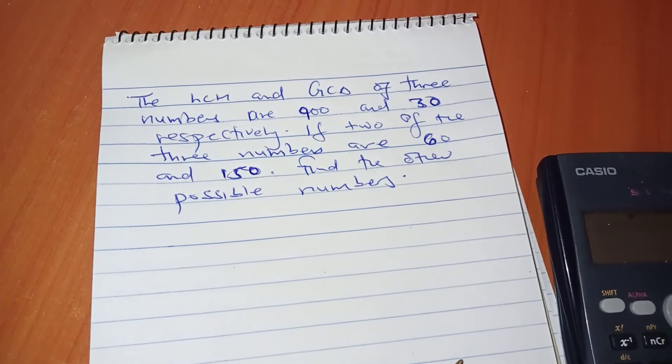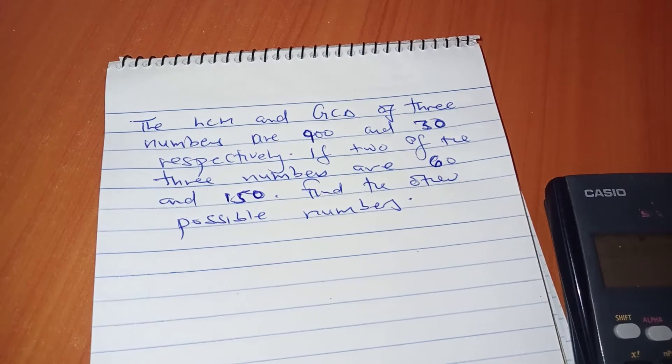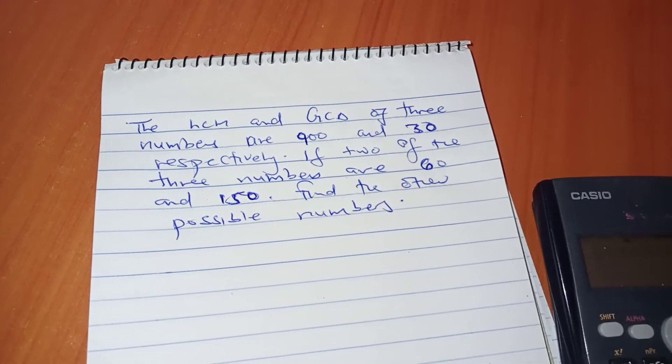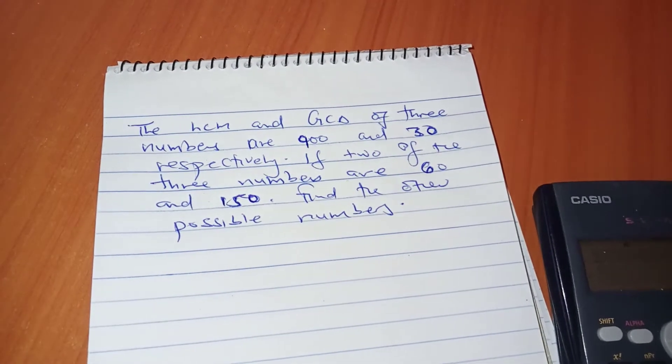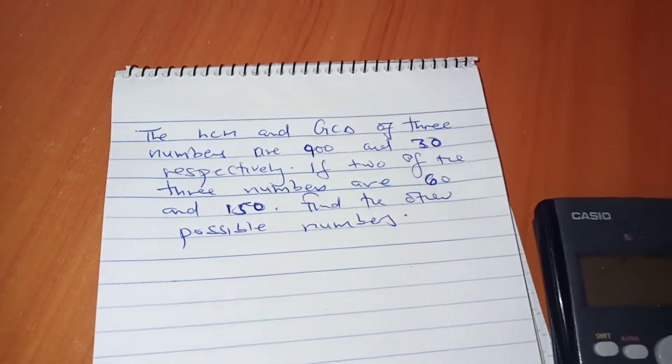Welcome to this video. The question reads: the LCM and GCD of three numbers are 900 and 30 respectively. If two of the three numbers are 60 and 150, find the other possible numbers.